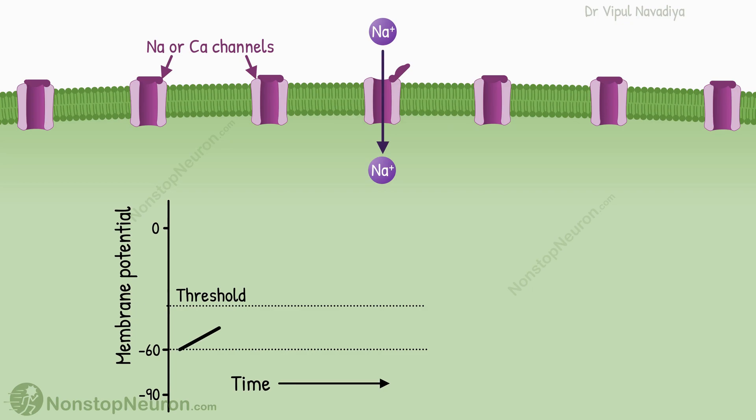This entry of positive ions increases membrane voltage. This, in turn, opens more channels, leading to more entry of ions. This way, the voltage keeps increasing.